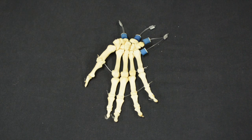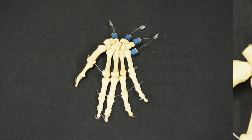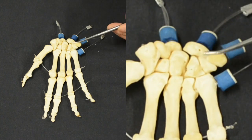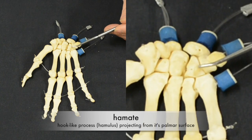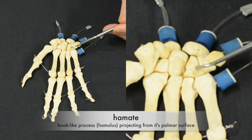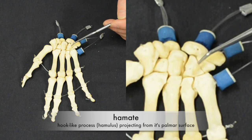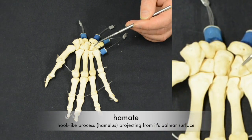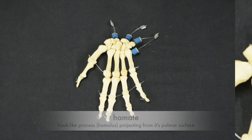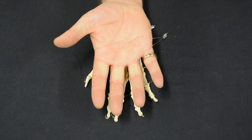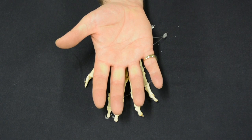Next we need to determine anterior from posterior. This carpal bone here is called the hamate, and has a protuberance which is anterior. So we know that this is the right hand.